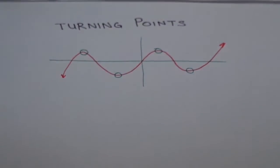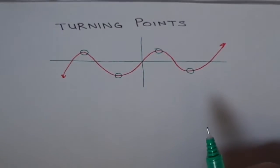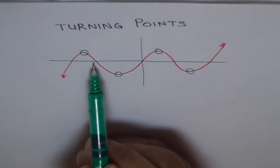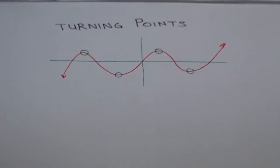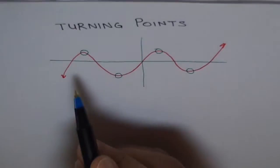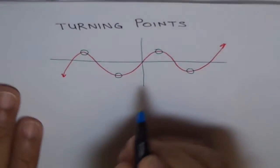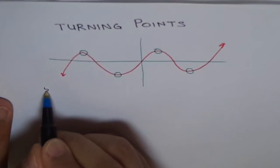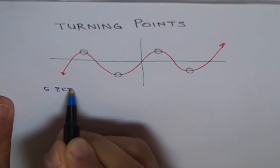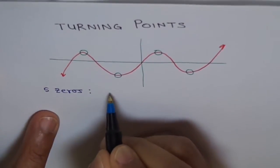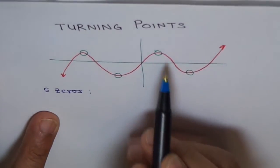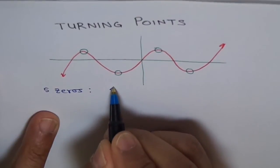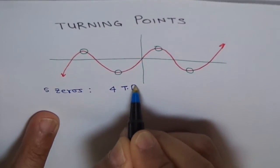If you look at this polynomial, what could be the degree of this? It has zeros 1, 2, 3, 4 and 5. It has 5 zeros. And we have how many turning points? 1, 2, 3, 4 — which leads to 4 turning points.